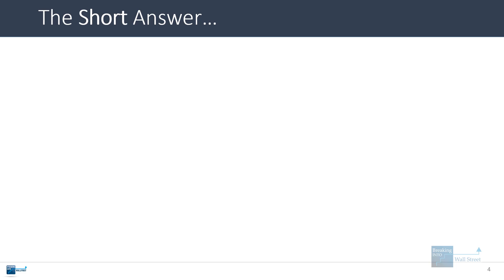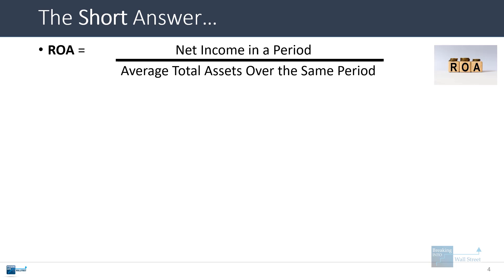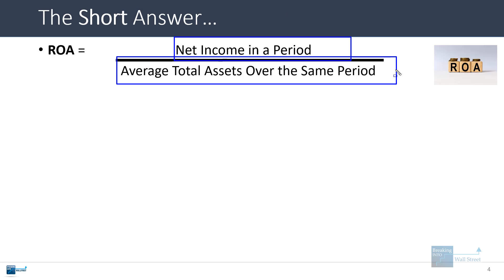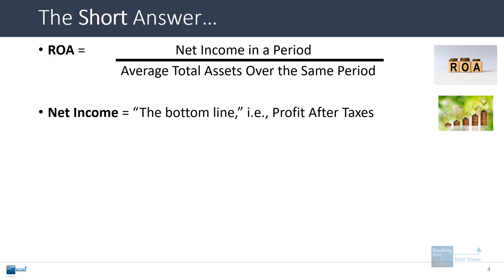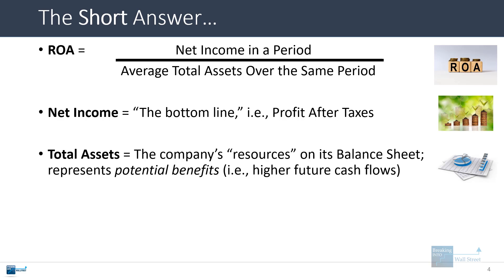Here's the short answer. Return on assets is defined as a company's net income in a certain period divided by the company's average total assets over that same period. So if it's a year, you would take the net income for the year and then take the average total assets — the assets at the end of the year and the assets at the beginning of the year, averaged and used in the denominator. Net income is just the company's bottom line — profit after taxes on the income statement. Total assets represent the company's resources on its balance sheet.